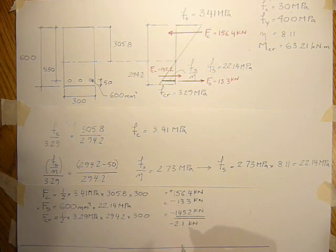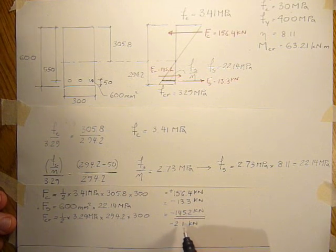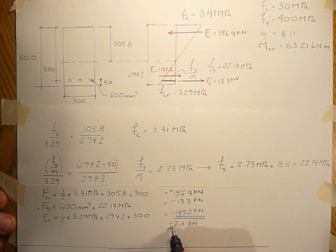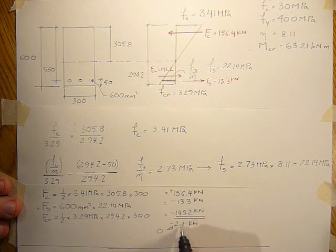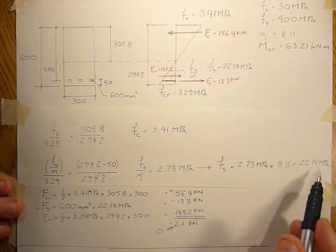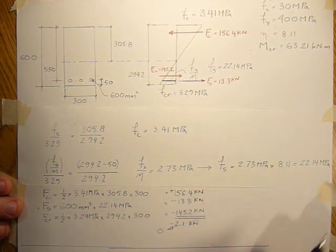And it comes out to be very close to zero. Not exactly zero. But it's really a rounding error that created the 2.1. If we carried all our significant digits we'd have this bounce right out to zero.